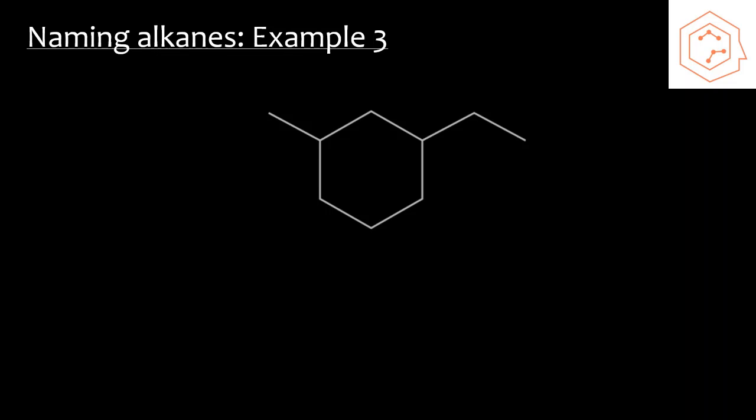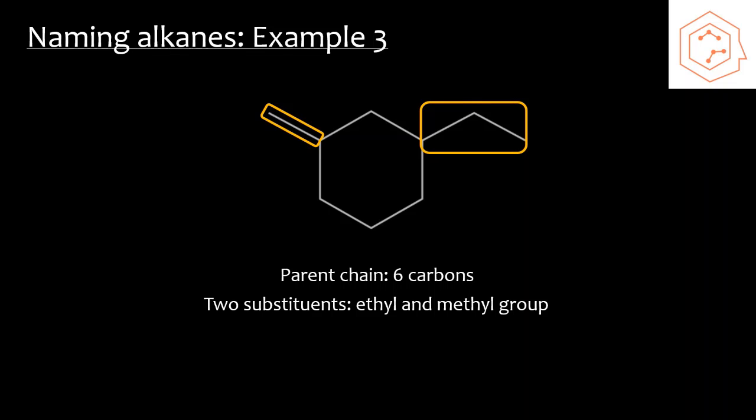Here's an example for naming cyclic alkanes. We're going to first want to identify the parent chain. The parent chain here is the cyclic structure, and if you count, we have six carbons present. So we're going to use the prefix hex for this. Next, we're going to want to identify the substituent groups. There are two substituent groups here, an ethyl group and a methyl group.